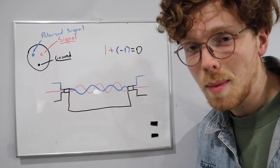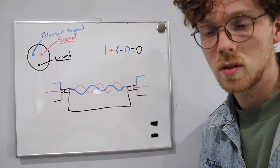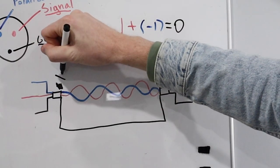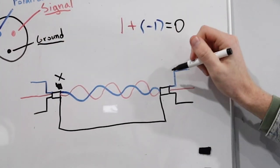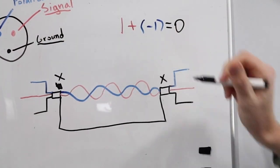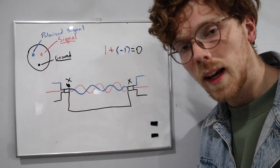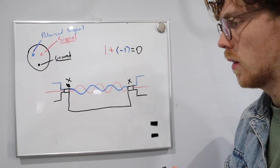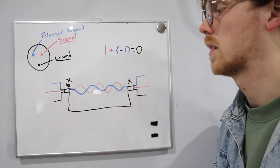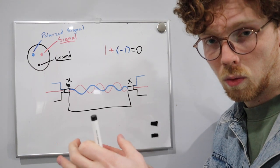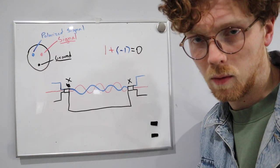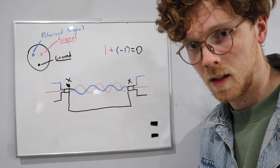The process of polarization happens at one end, and then it is flipped back to normal phase at the other end. That's how an XLR cable works. What we're essentially doing is cutting out any of the signal — and therefore any background noise — that you might get from your XLR cable while it's traveling through the cable.